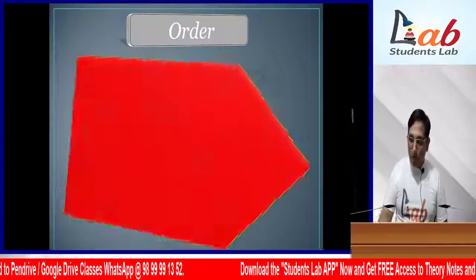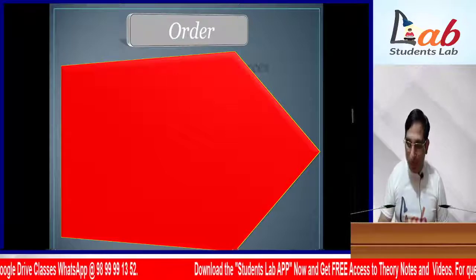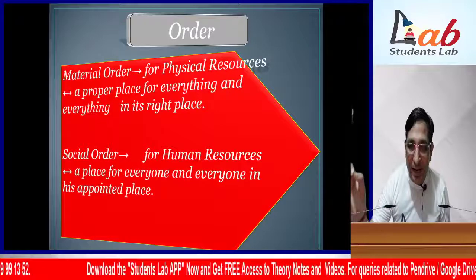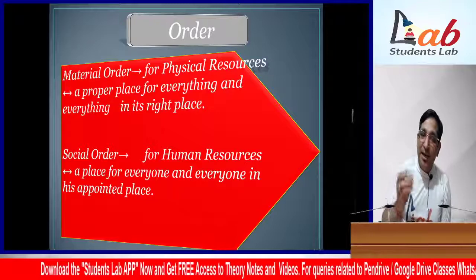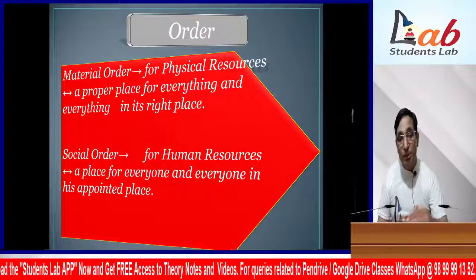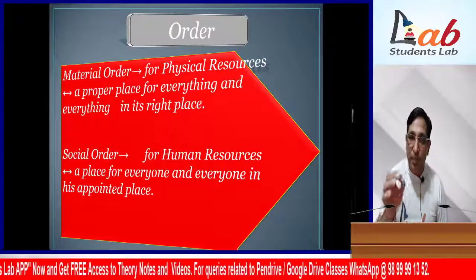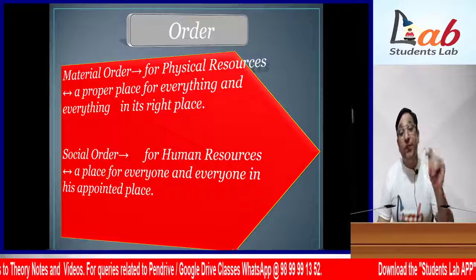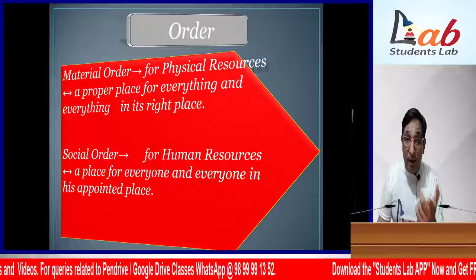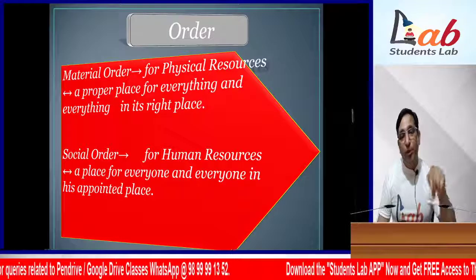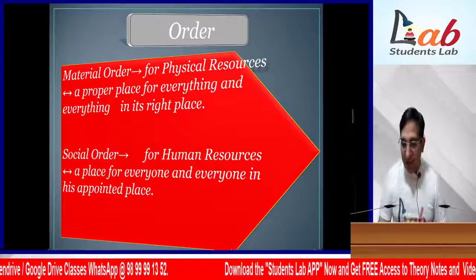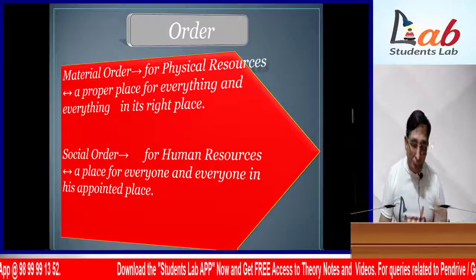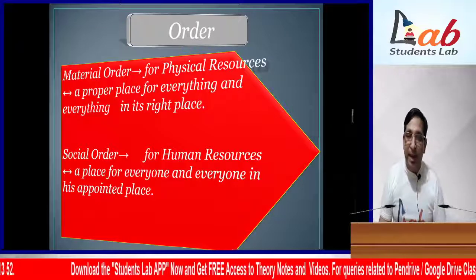The next principle was Order. There are two types of order: Material Order and Social Order. Material Order says: a proper place for everything and everything in its right place - every object should have a place and every object should be in its place. Social Order applies to human resources: a place for everyone and everyone in their appointed place - every employee should have a place to sit and every employee should be at their place.